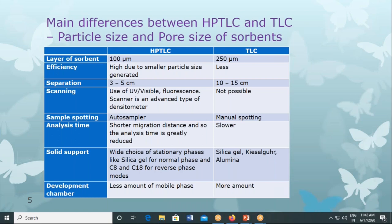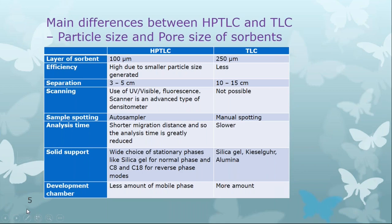Analysis time is much shorter for HPTLC compared to TLC. The analysis is completed faster in HPTLC because of the shorter migration distance — separation is completed in 3 to 5 centimeters, compared to 10 to 15 centimeters in TLC. That is almost three times the distance to be traveled, so migration time is much longer in TLC. Therefore, analysis time is much shorter in HPTLC, and you can do more analyses within a given period of time.